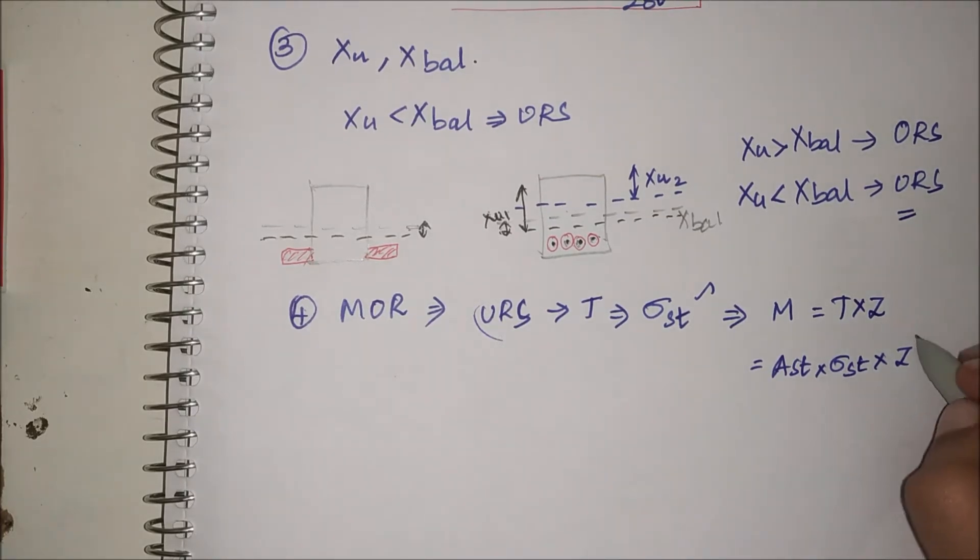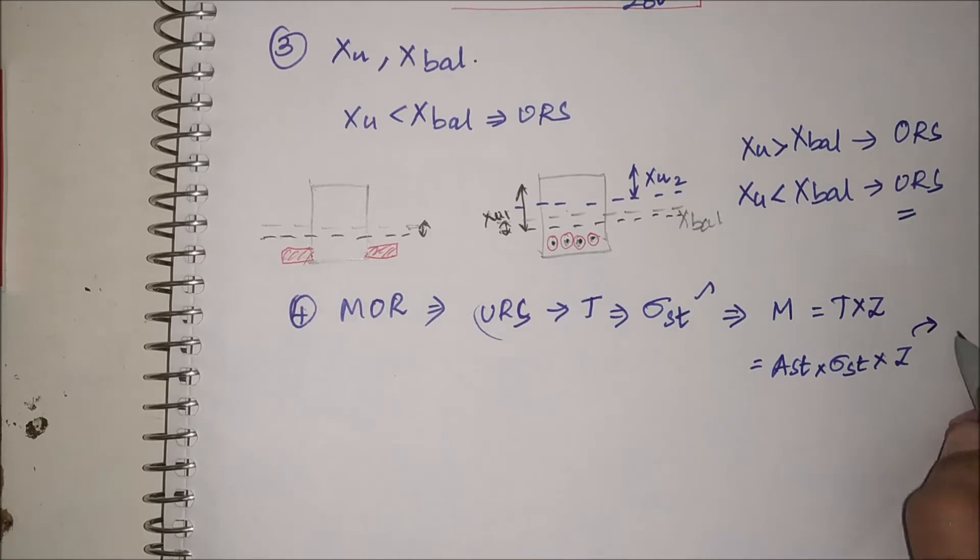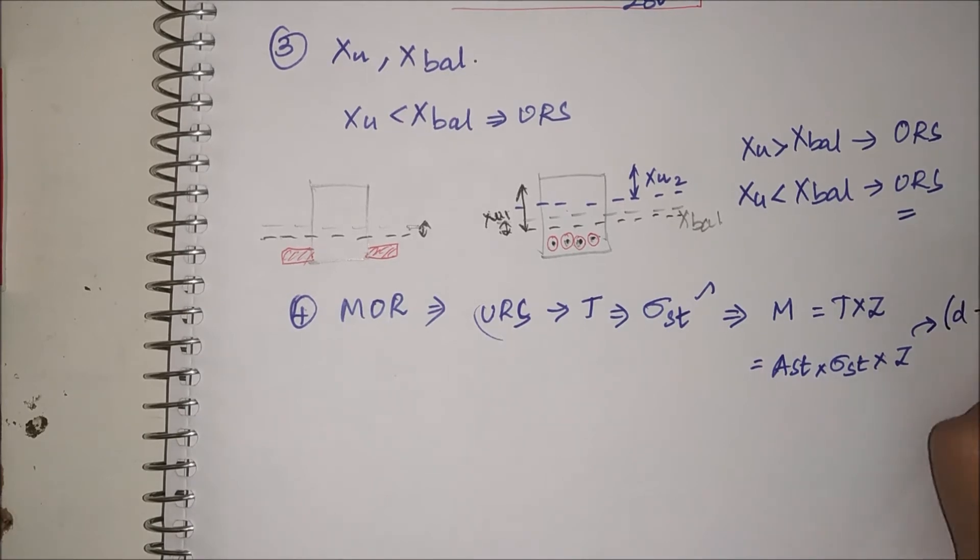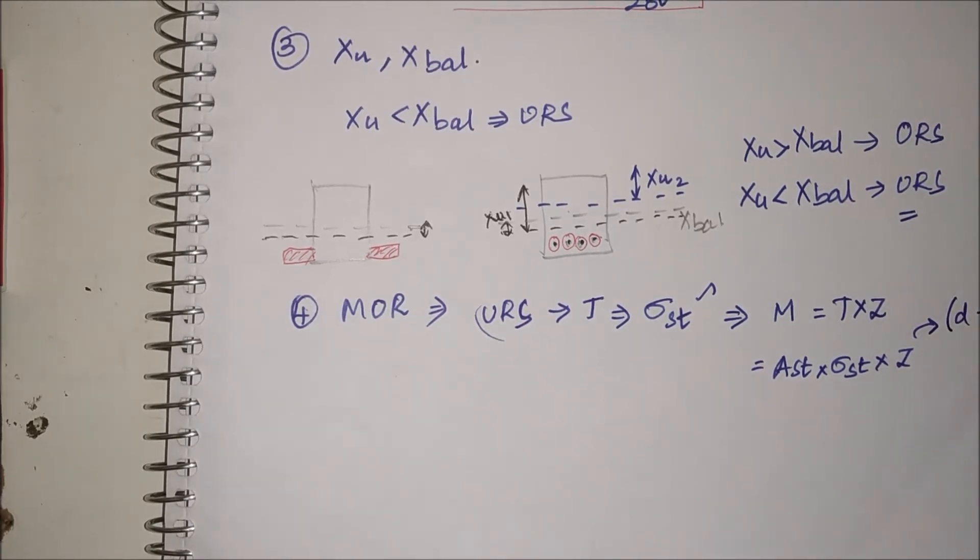Therefore Z will be equal to—if it is a balanced section it would have been a different case. Since it is an under reinforced section, this will be d minus Xu by 3.